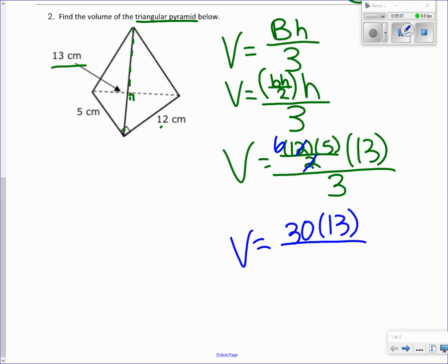Right now we can get rid of it because we know three goes into 30 ten times. And 10 times 13 is 130. Remember, we have cubic units, centimeters cubed.